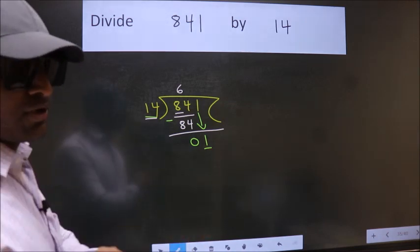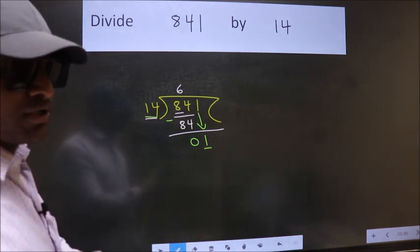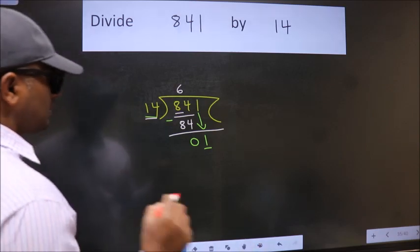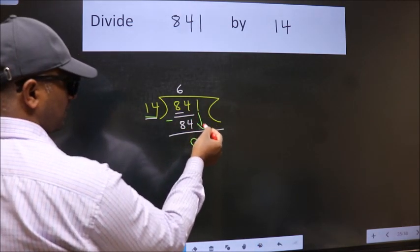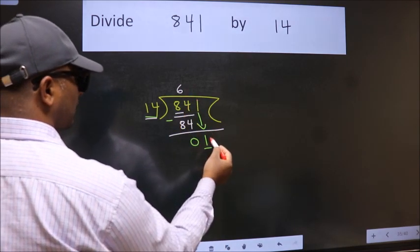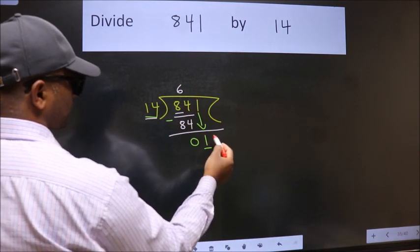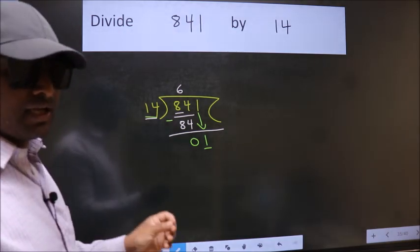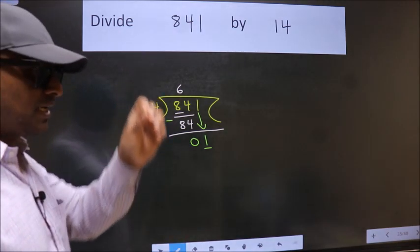Which is wrong. Why is it wrong? Because just now you brought this number down, and in the same step you want to put dot, take 0, which is wrong. I repeat: bring down the number.